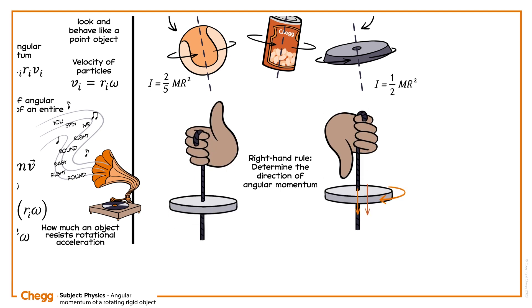Suppose you take your right hand and curl your fingers in the direction of rotation. Then your thumb points in the direction of angular velocity, omega vector. If the rotational axis is an axis of symmetry, then the angular momentum, vector L, is the same direction.